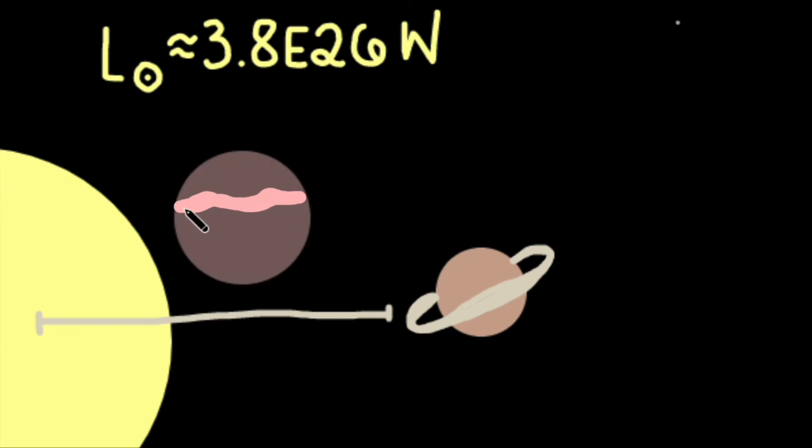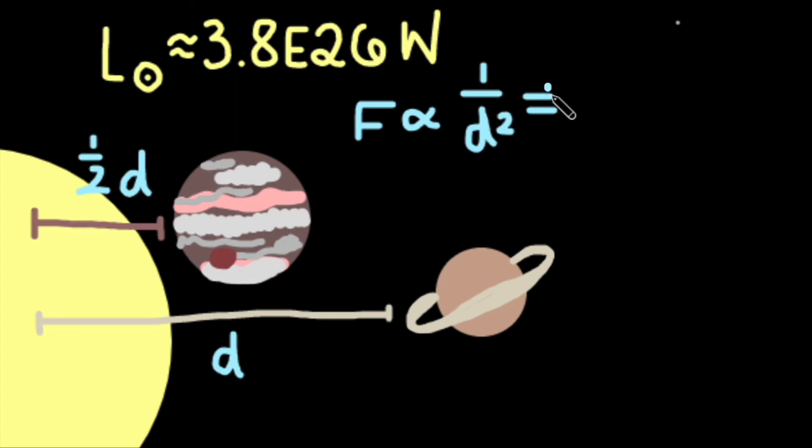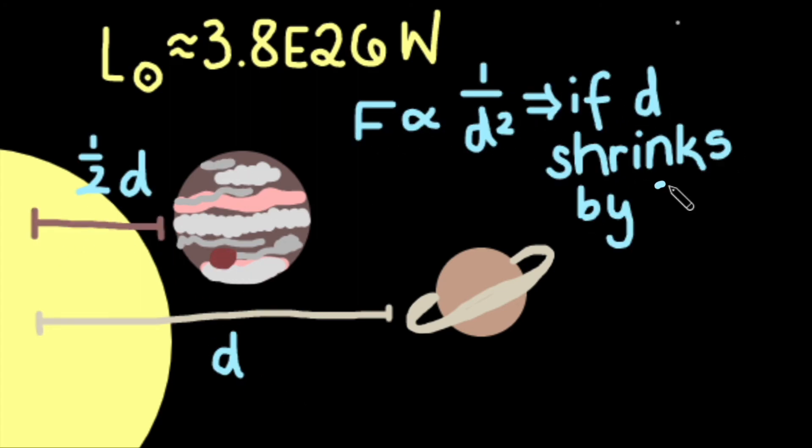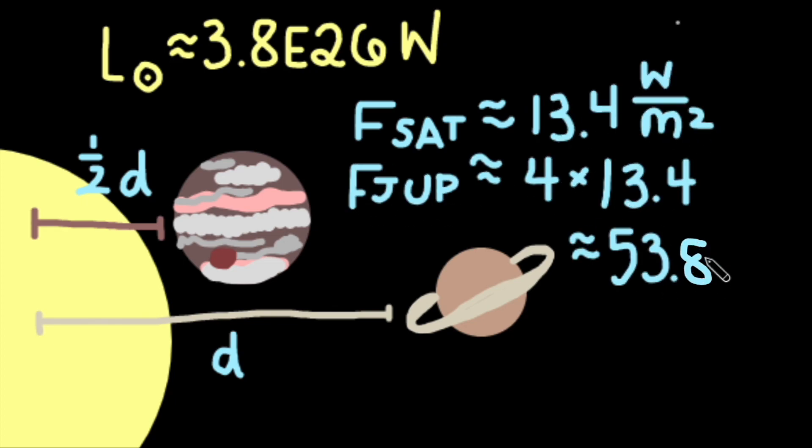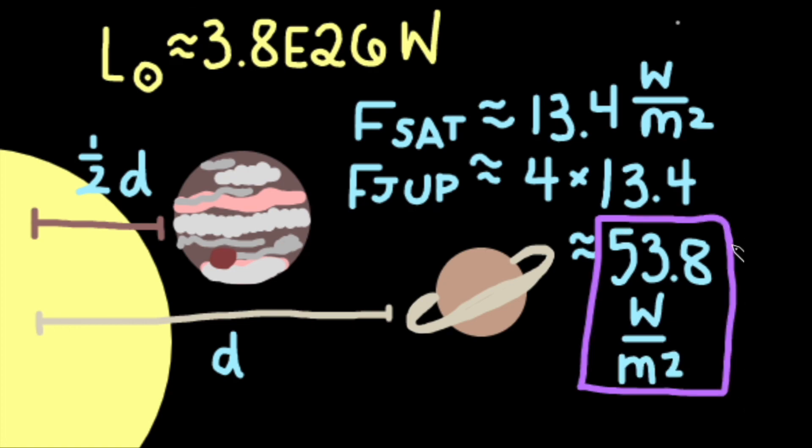What flux does Jupiter experience if it is about twice as close to the Sun as Saturn is? Well, the flux should certainly be greater than the flux experienced by Saturn. By the inverse square law, if Jupiter is half the distance to the Sun as Saturn is, it should experience a flux that is four times greater than Saturn experiences. So the flux from the Sun on Jupiter is about 13.4 watts per meters squared times 4, or 53.8 watts per meter squared.